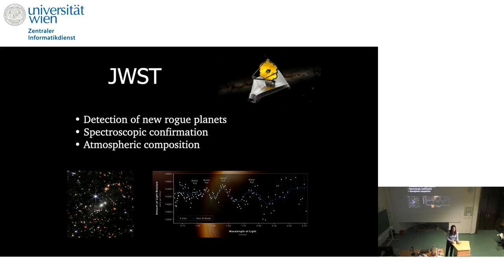Part of these rogue planets were found in isolation, and part were probably formed in a disk and afterwards were ejected. It's likely both, but which is the most frequent, we are not in a position to say yet. When one of the planets in a planetary system is ejected — especially a big one like a super-Jupiter — the rest of the planets are somehow also perturbed and it's possible that they somehow migrate or change their initial configuration.